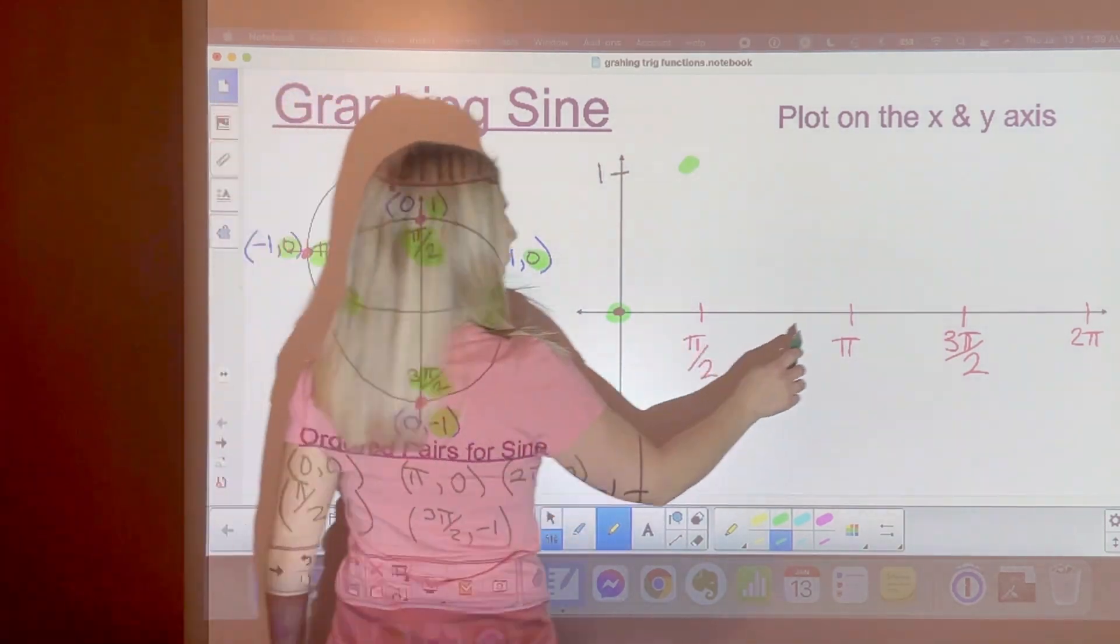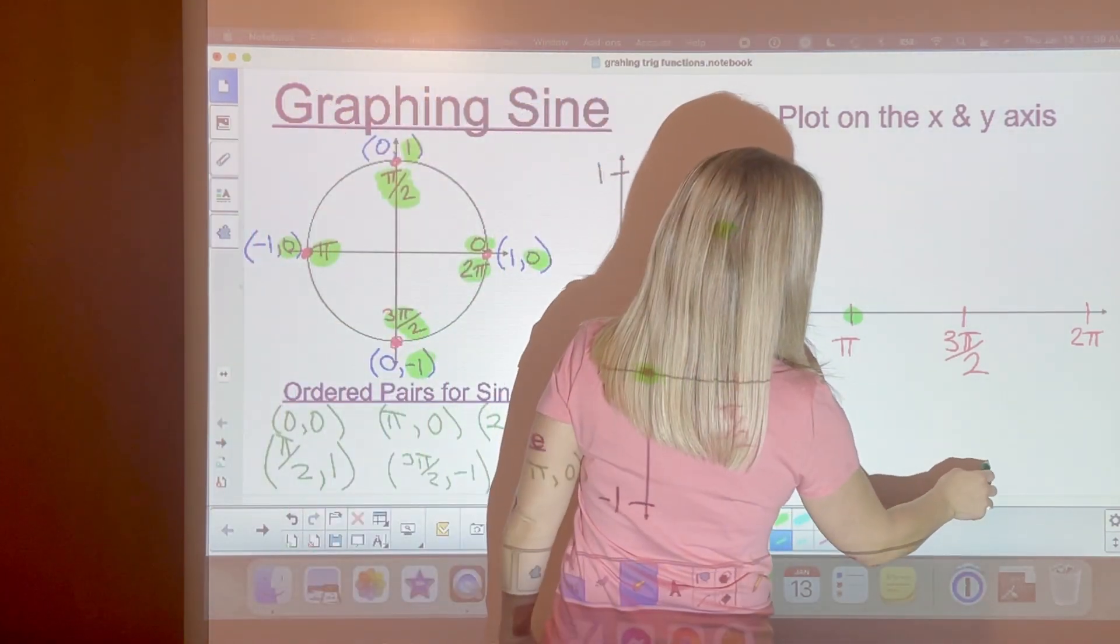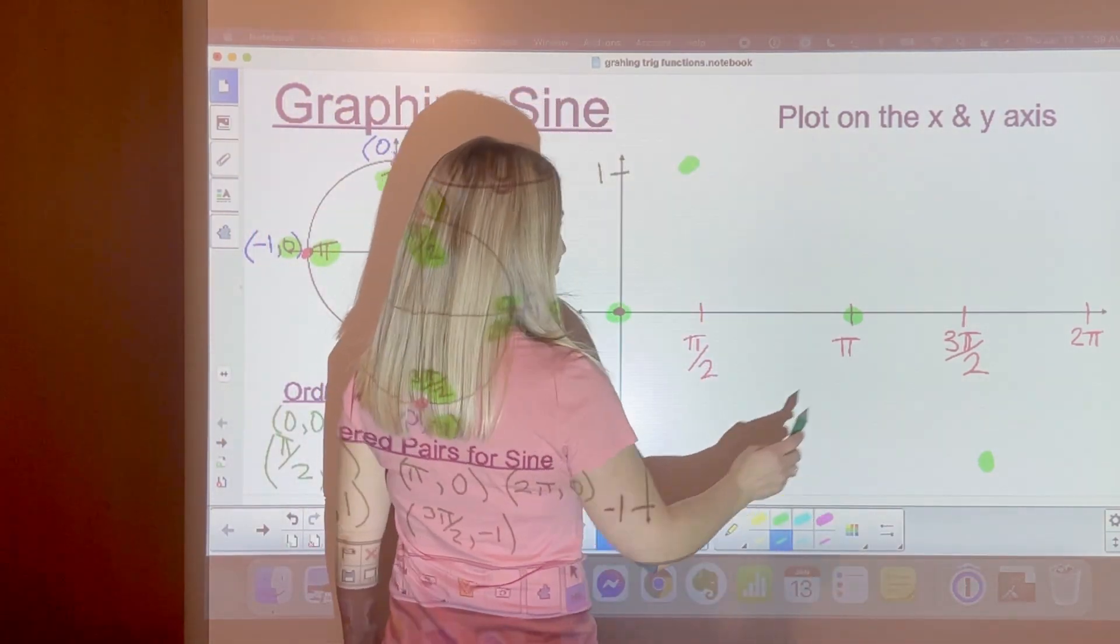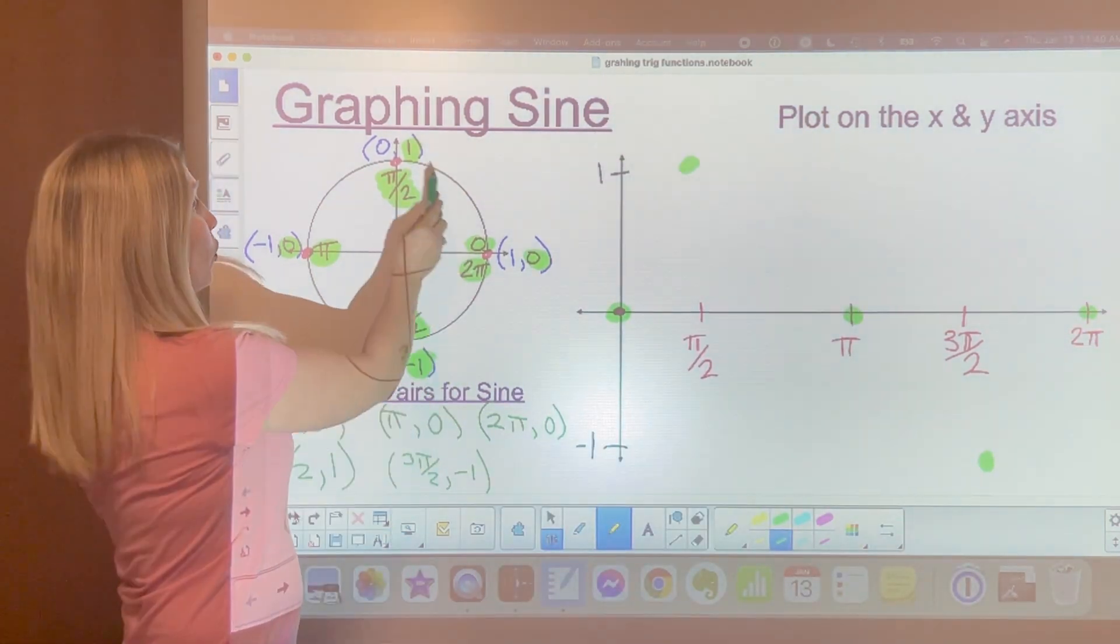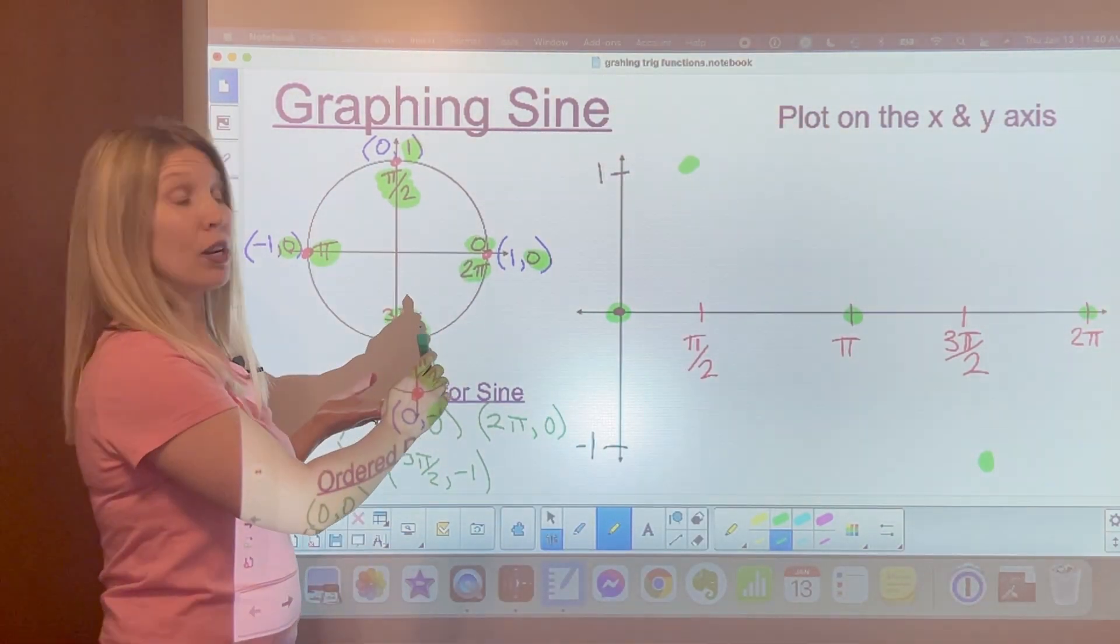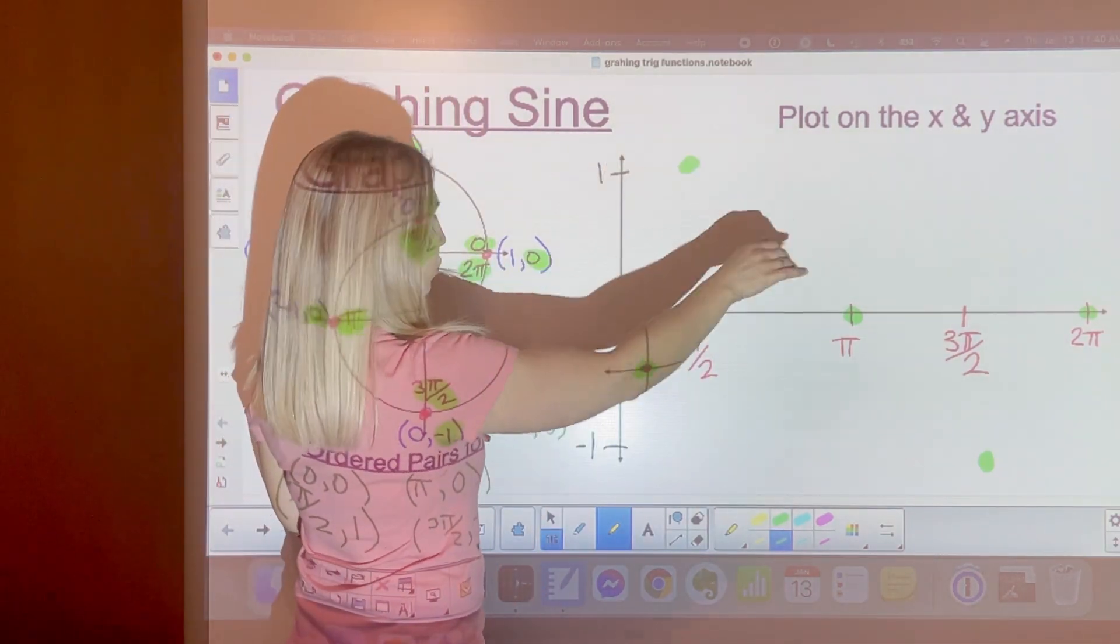Then we have pi at 0, 3 pi over 2 at negative 1, and 2 pi at 0. What you'll notice is we're graphing from a circle which means our lines are curved. They're not just going to be straight lines from here to here. They're going to be kind of curved lines.